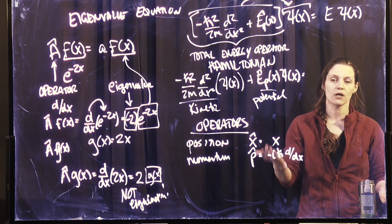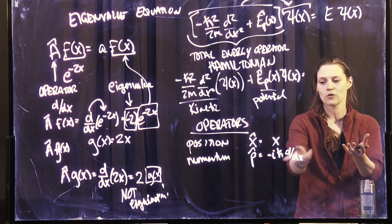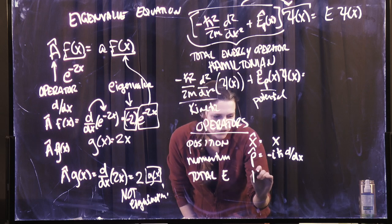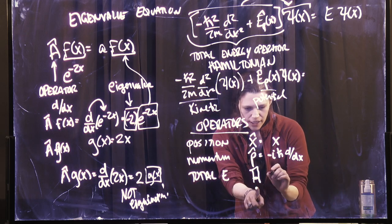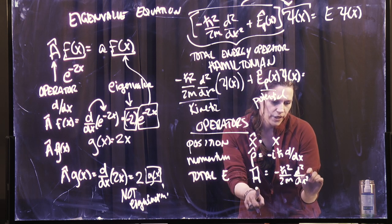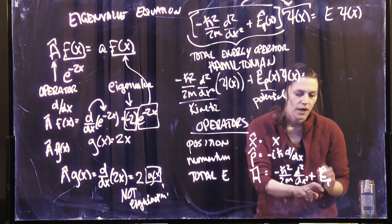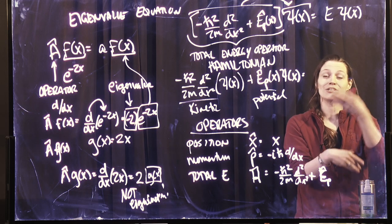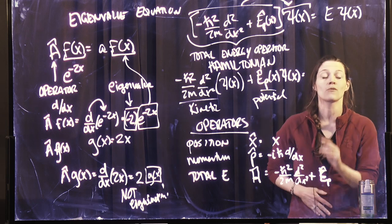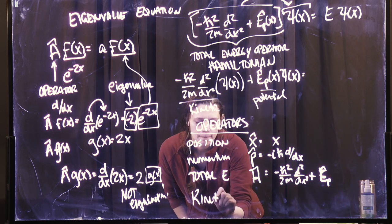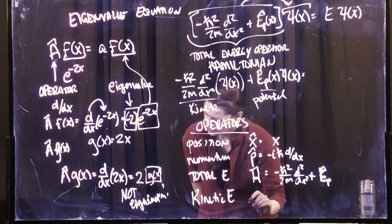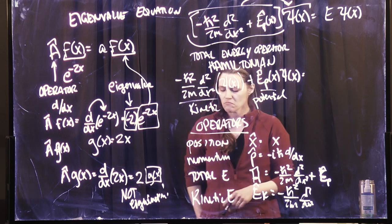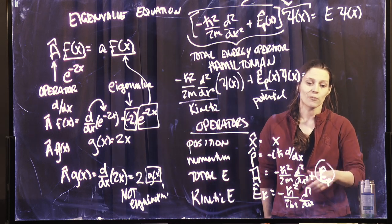If you wanted to know information about your wave function — particularly about the momentum — you would apply the momentum operator. Likewise, the total energy Hamiltonian is given this fancy H symbol, and it's minus h-bar squared over 2m d-squared dx-squared plus your potential. The kinetic energy operator is minus h-bar squared over 2m d-squared dx-squared, without the potential portion. The potential energy operator is just that value.